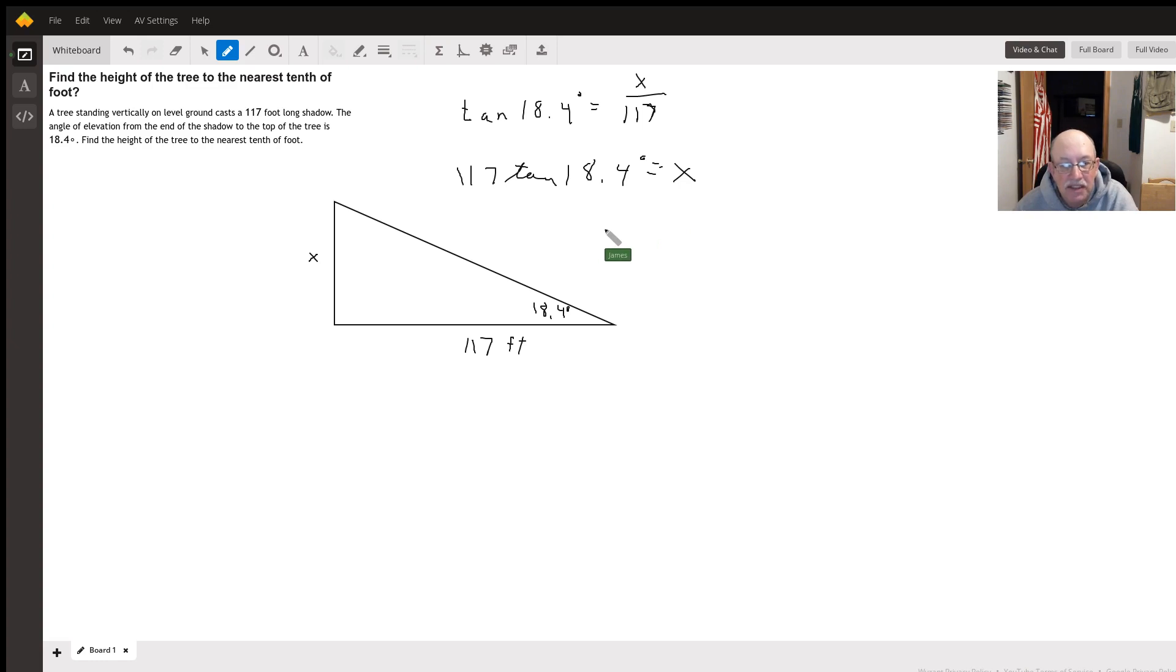Going to the nearest tenth of a foot, I get 38.9 feet equals x. So there you go. On most of these tree height problems, you usually use tangent.